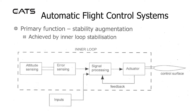Automatic flight control systems. The primary function is stability augmentation, achieved by inner loop stabilisation. In the inner loop there is attitude sensing and error sensing. This leads to signal processing and movement of an actuator attached to a control surface, which is outside the inner loop. There is feedback from the actuator to the signal processing unit. External inputs may also be applied at the signal processing stage.